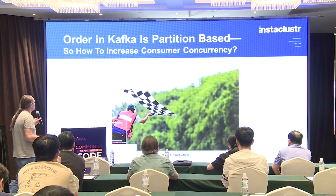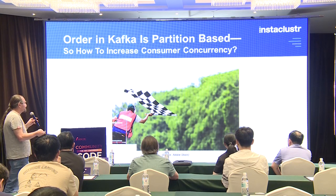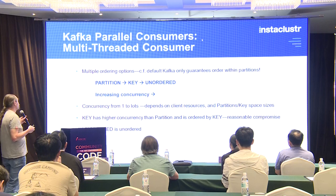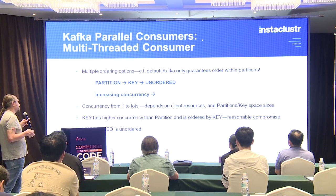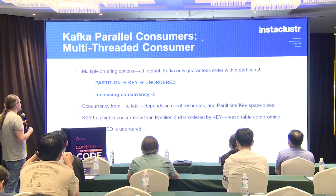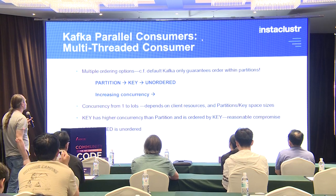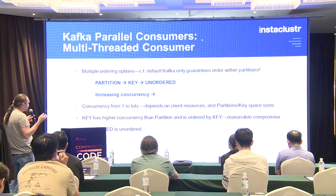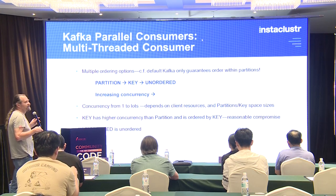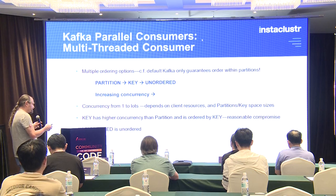So what can you do instead? Order in Kafka is based on partitions only. How do you increase consumer concurrency and still maintain the ordering of events? The Kafka parallel consumer is basically a multi-threaded consumer with multiple ordering options, compared to the default consumer which only guarantees order within partitions. You have three options: partition order, key order, or unordered — and the concurrency of the consumer increases towards the right. Key order has higher concurrency than partition order and is a reasonable compromise.